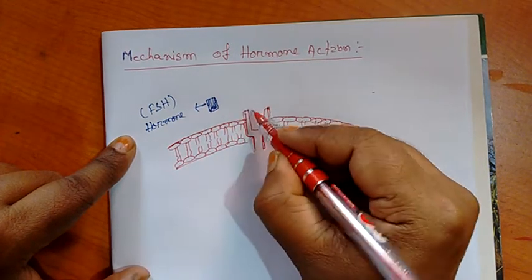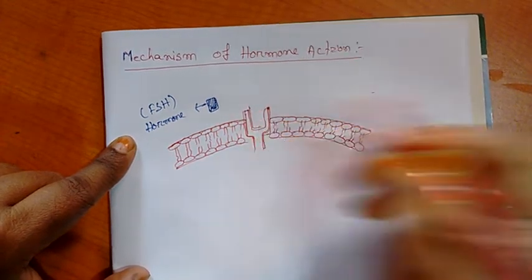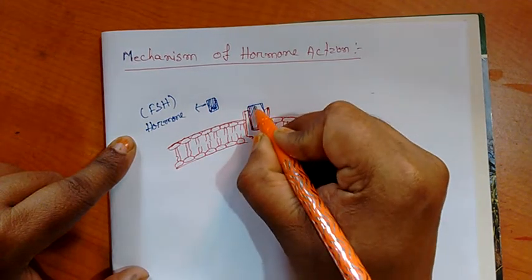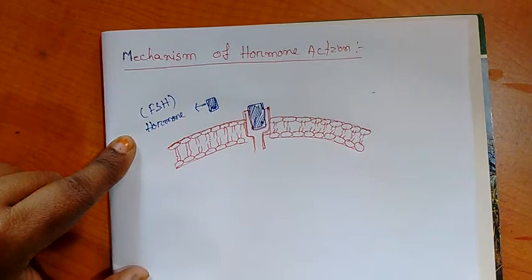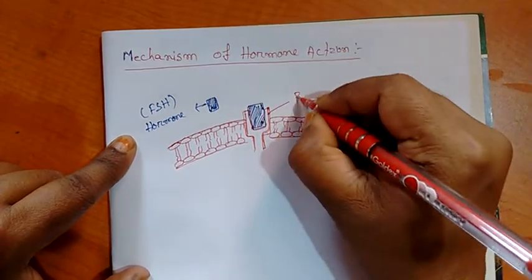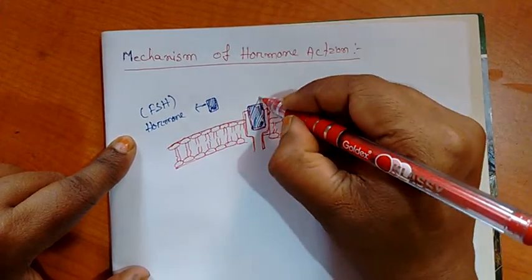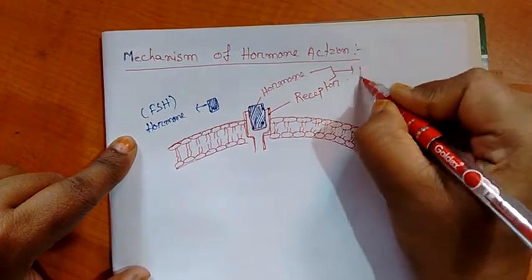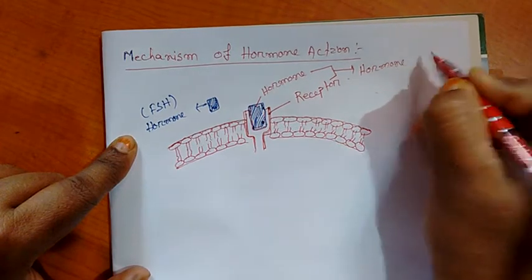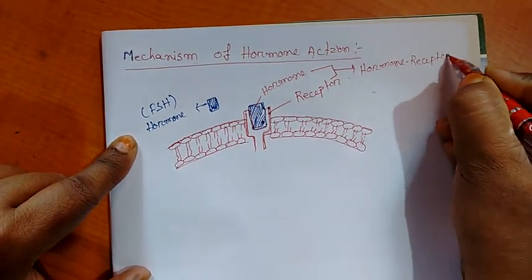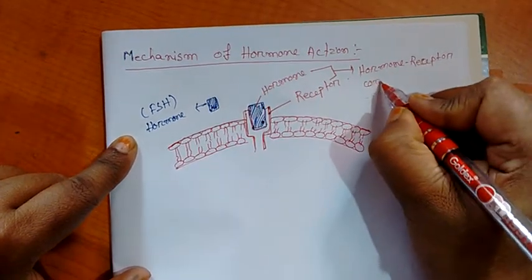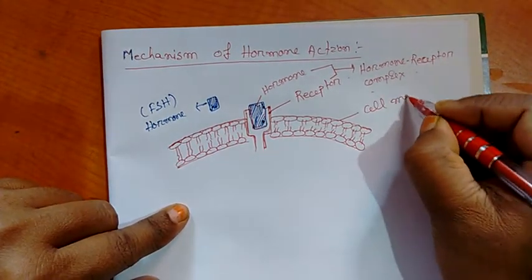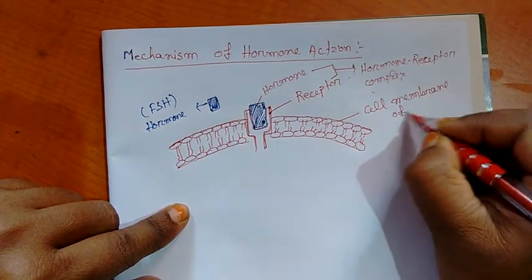And here hormone comes and binds with the receptor, forms the hormone receptor complex. This is the hormone and this is the receptor. Both form hormone receptor complex.